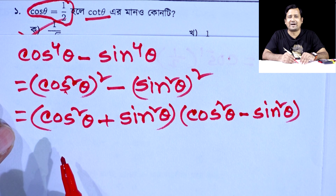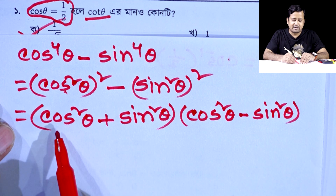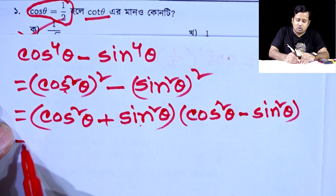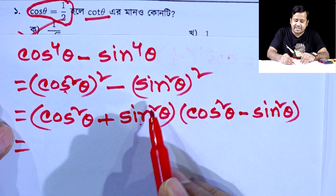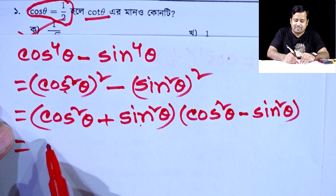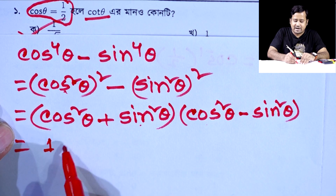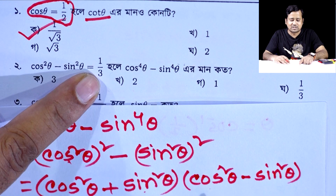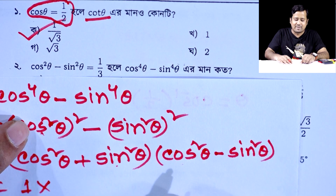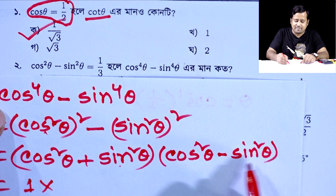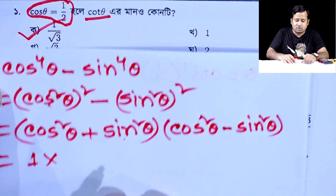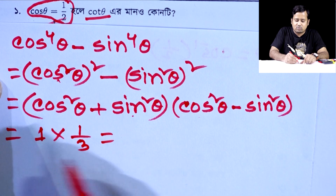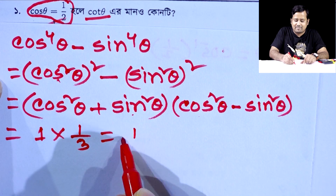So we have (a plus b) into (a minus b). Substituting: (cos squared theta plus sin squared theta) into (cos squared theta minus sin squared theta) equals 1 by 3. So we have 1 by 3.